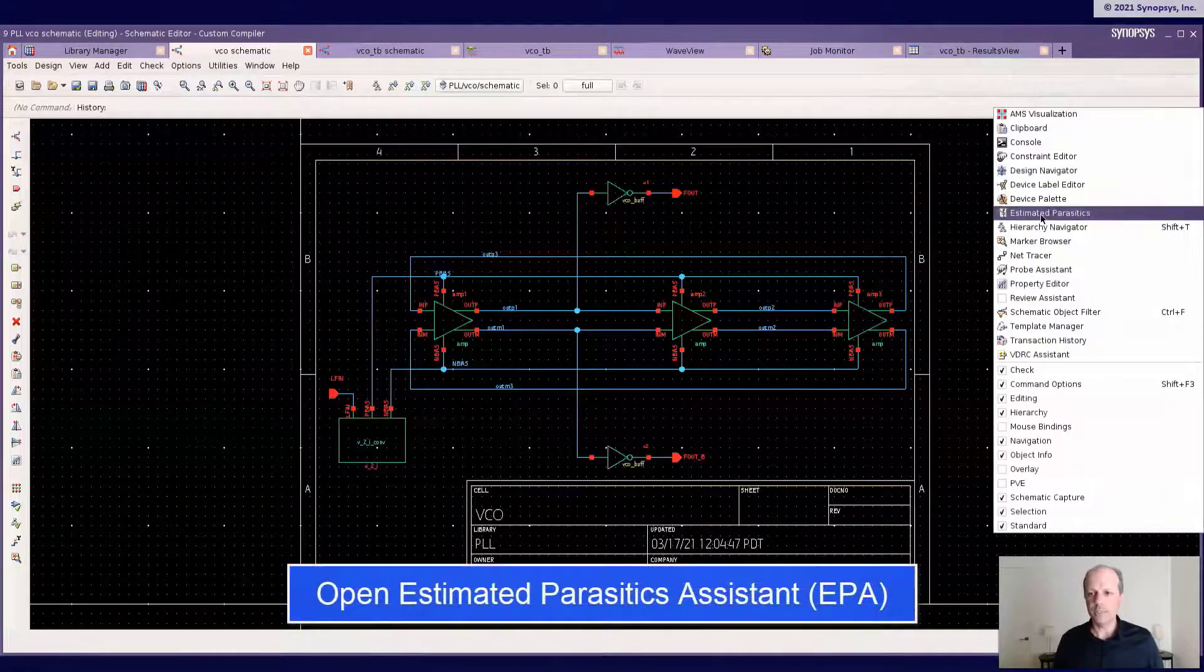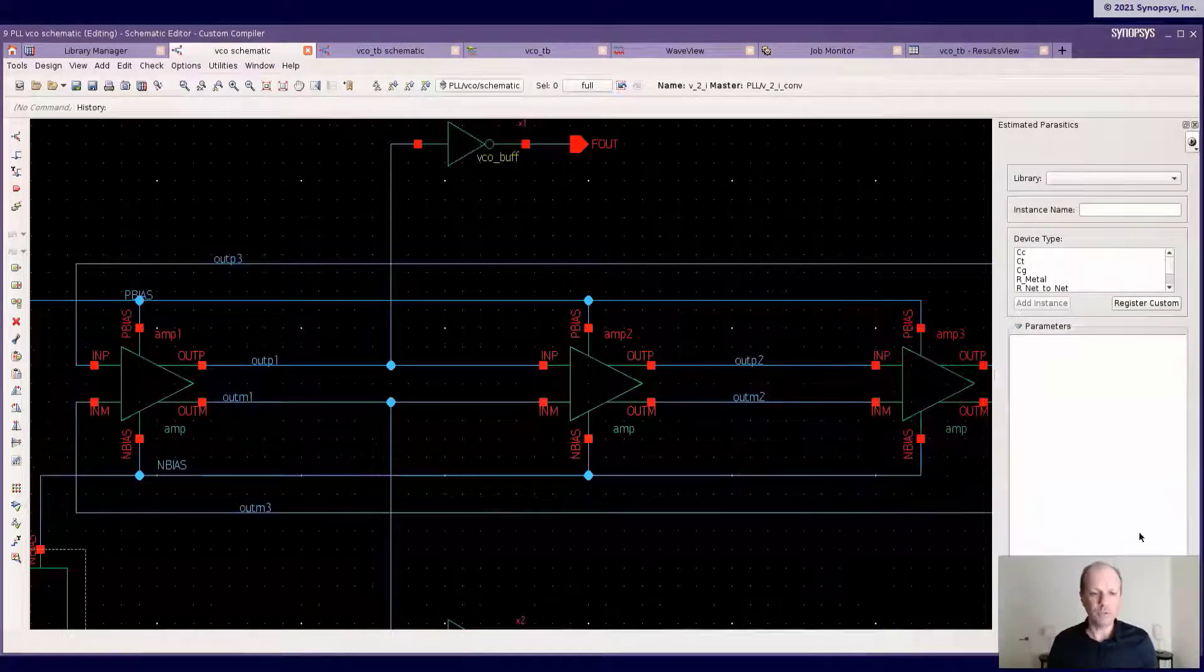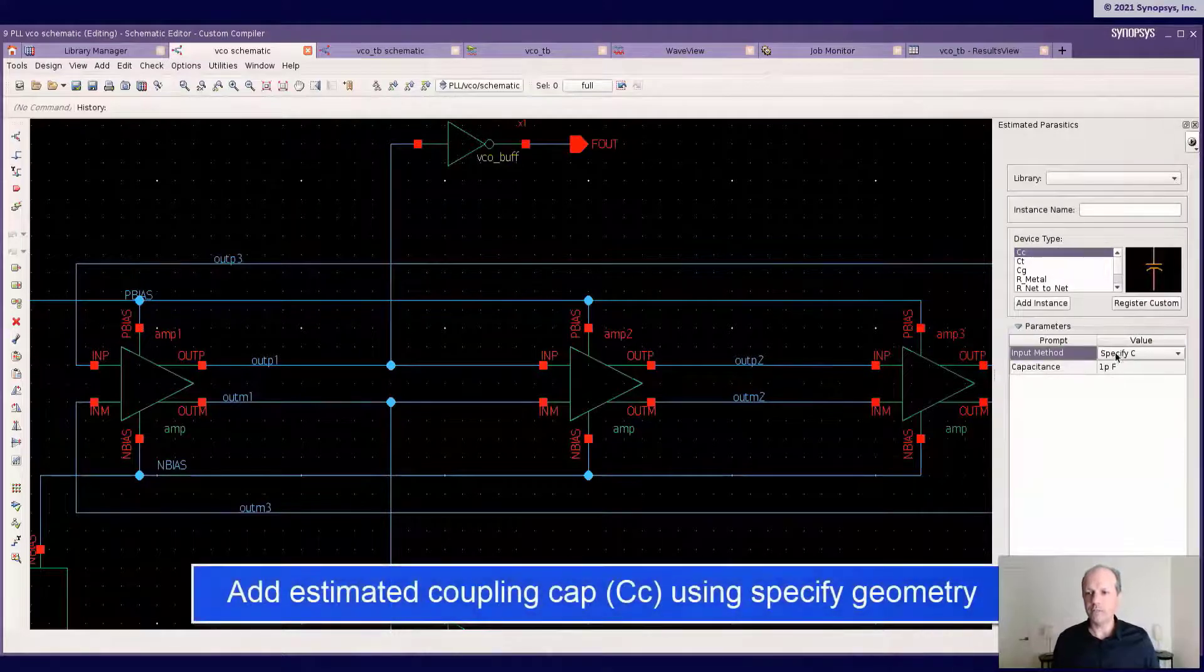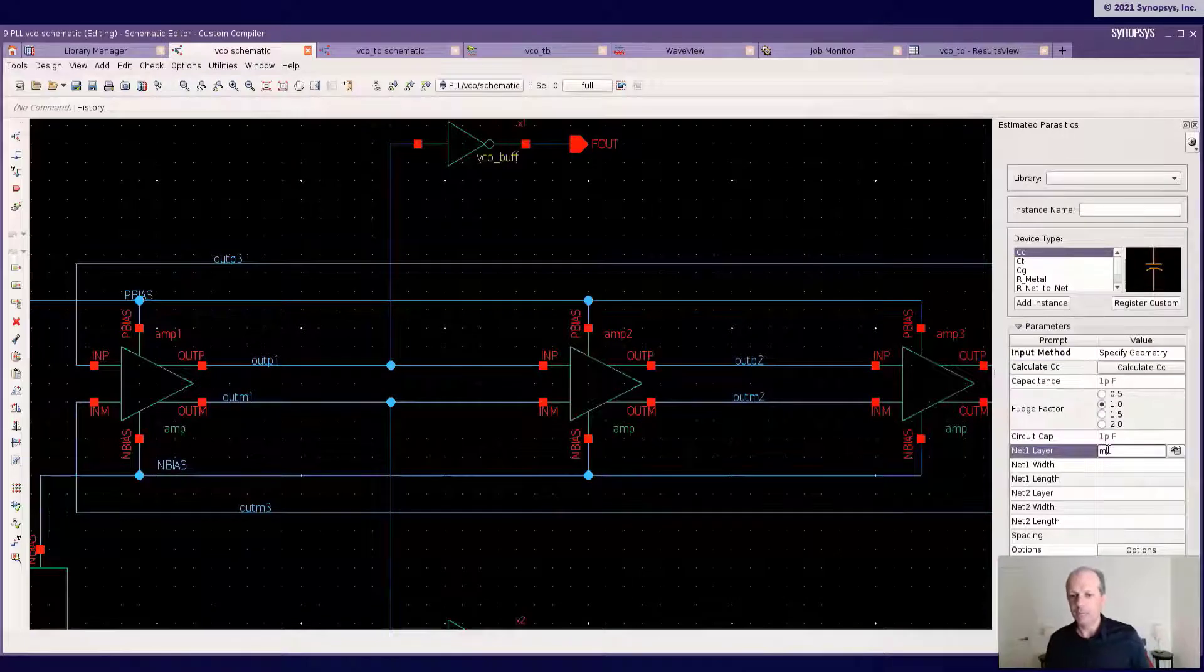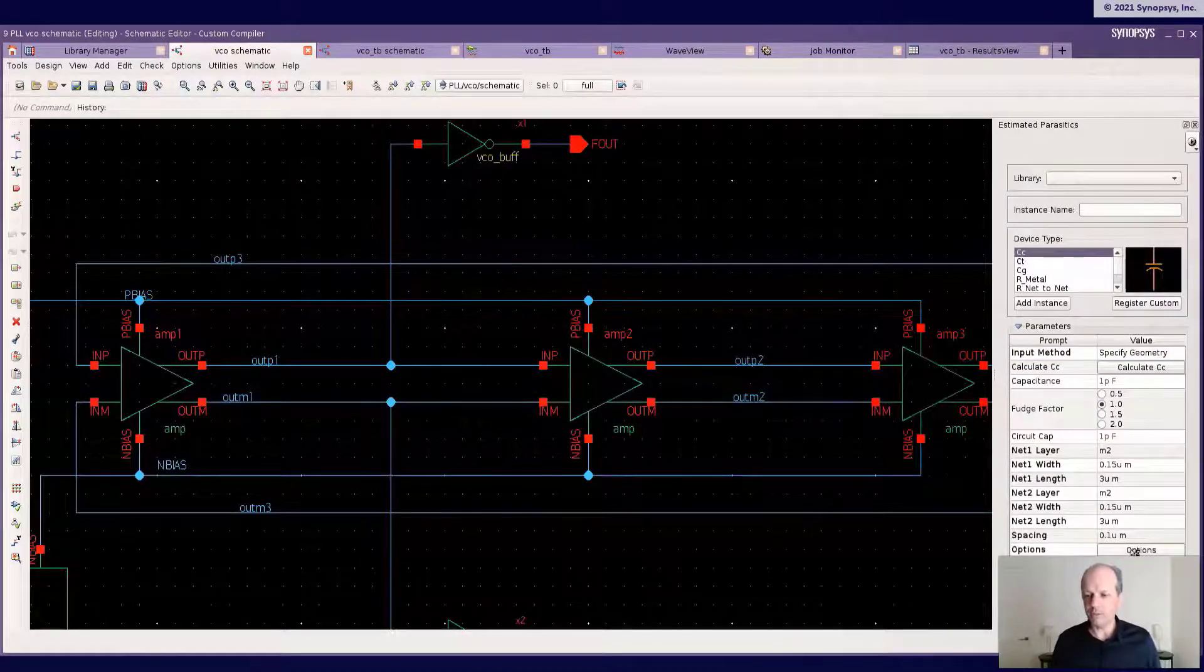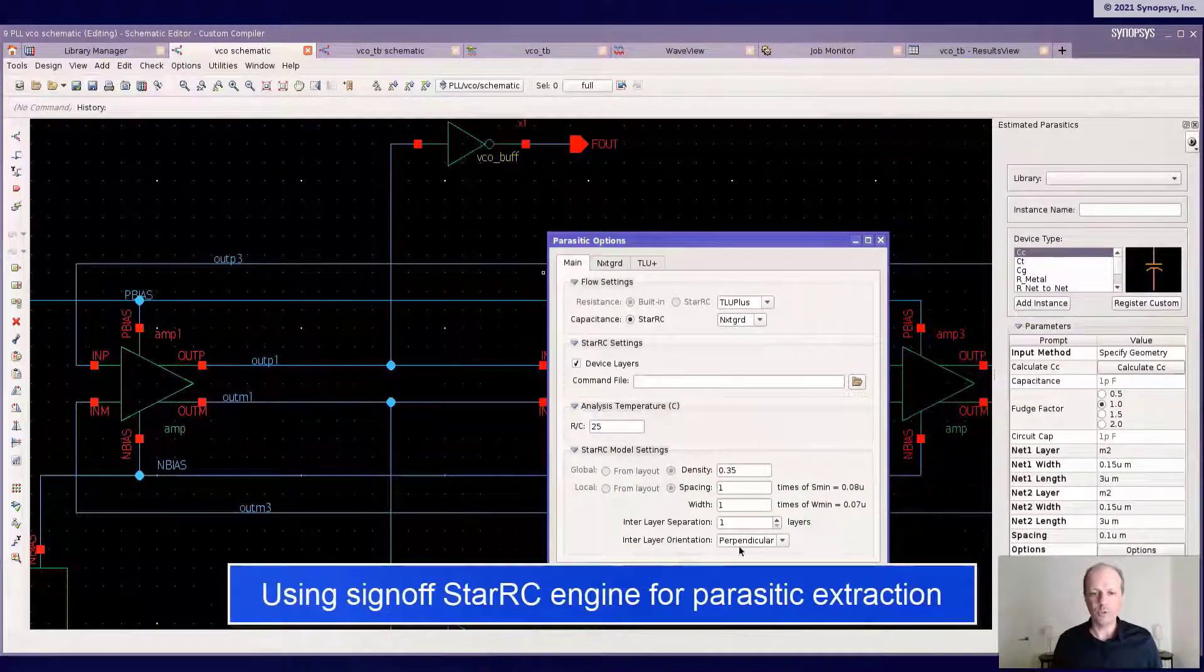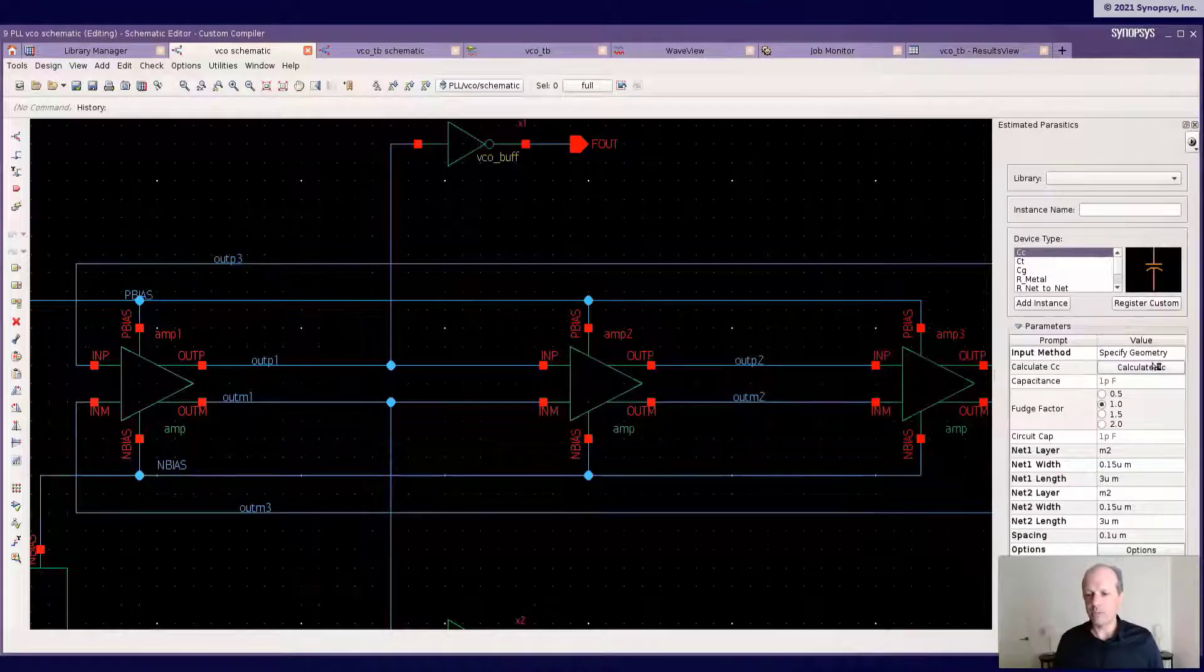So let's go ahead and start estimating the parasitics in the VCO design level itself. I'll start by estimating the coupling capacitance between a couple of nets here, P and out M. And what I'll do is estimate which layers I'm going to use and what dimensions of the layers I'm going to use.